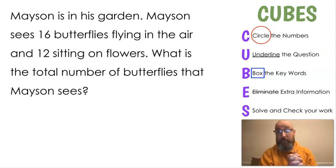Are you ready? This one, we're going to go straight through and do the solve. So let's look at this question. Read it with me. Mason is in his garden. Mason sees 16 butterflies flying in the air and 12 sitting on flowers. What is the total number of butterflies that Mason sees? So let's go to C. What are the numbers? Do you see them? 16 and 12.